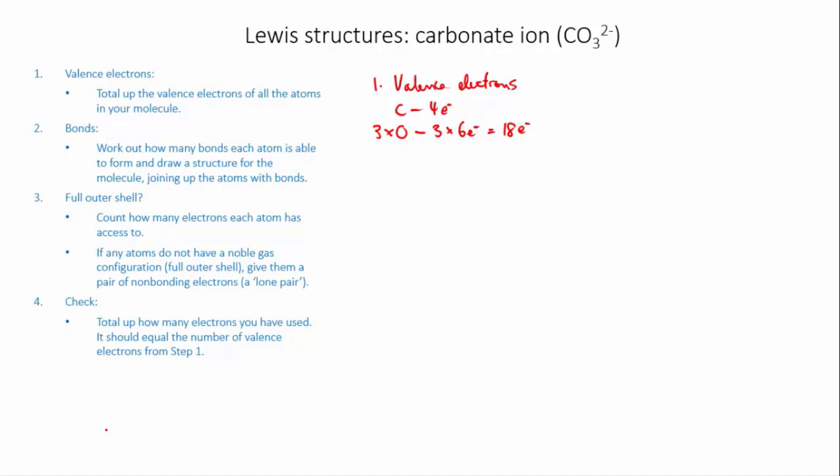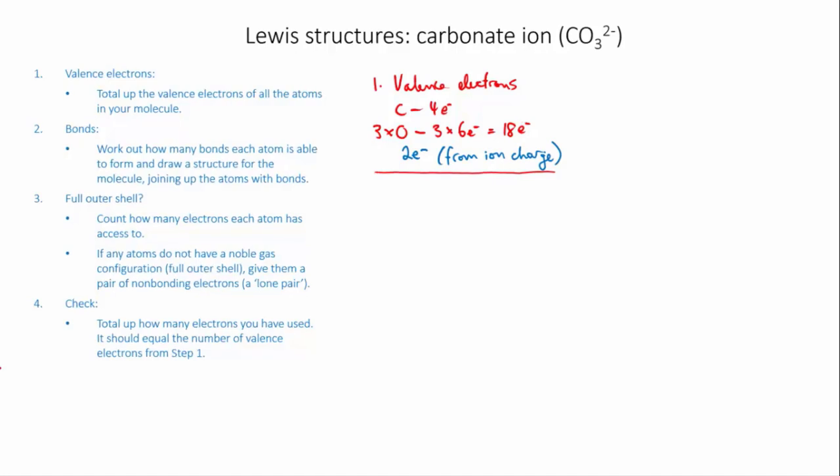This is an anion, a negative ion as opposed to a neutral molecule, which means that it's carrying a couple of extra electrons. Now its charge is two minus, so it's actually carrying two extra electrons. So in addition to the valence electrons from the carbon and the oxygen, we need to add two extra electrons that represent the ion's charge. Okay, from now on we continue as normal. So our total number of valence electrons is 4 plus 18 which is 22, plus another 2, which is 24 electrons.